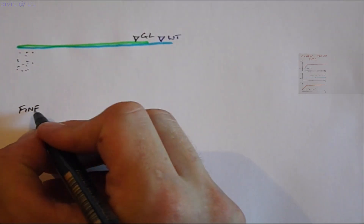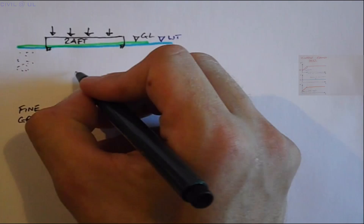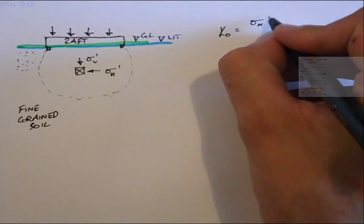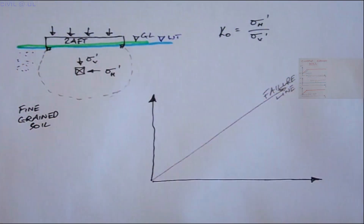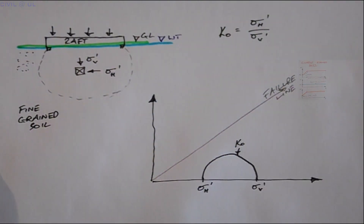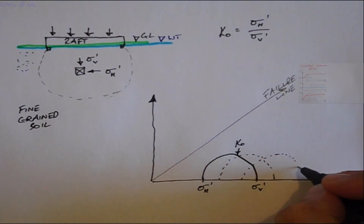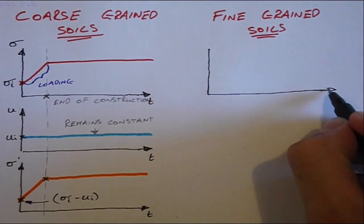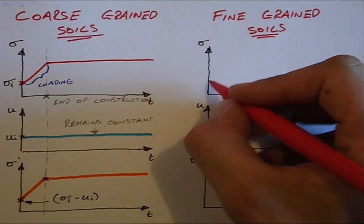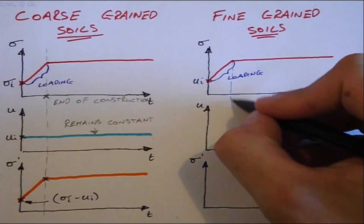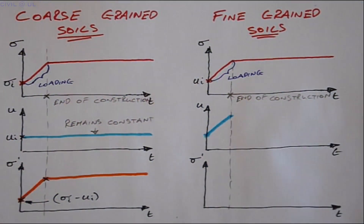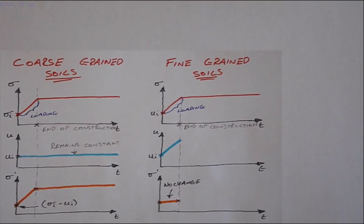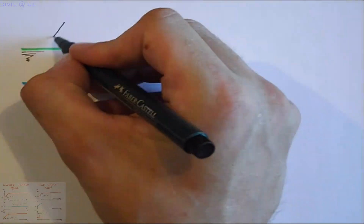Now let's take the exact same scenario but this time for a fine-grained soil. The K-nought in-situ stresses remain essentially the same as before. This time, however, as the foundation load is applied, the Mohr's circle will again shift to the right, but its diameter remains constant. This occurs because water is incompressible and it takes the additional load from the raft, as the low permeability soil prevents the water in the void space from escaping quickly enough.